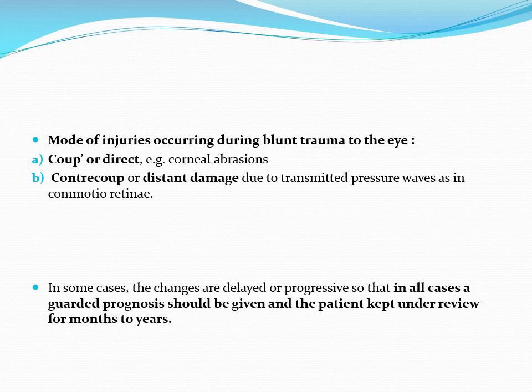In some cases the changes are delayed or progressive. The injury may happen today but the damage manifests later — after a few months or even years. Prognosis must therefore be given as guarded. For example, rosette cataracts can happen immediately or develop later after injury. Similarly, initial blood in the anterior chamber may manifest later as secondary angle recession glaucoma. So delayed manifestations of injury must be kept in mind.